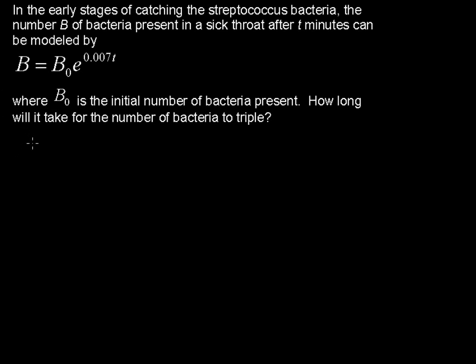Not a fun example, but very interesting actually. Bacteria grows very quickly in the body. So we have B as the number of bacteria, B sub 0 is the initial number, and T is the time in minutes.